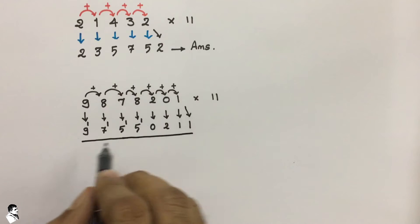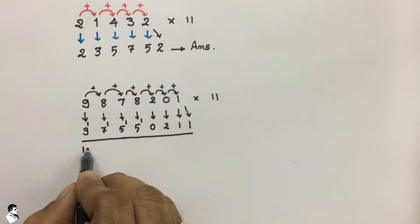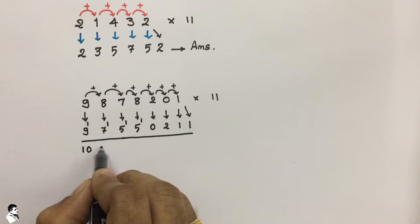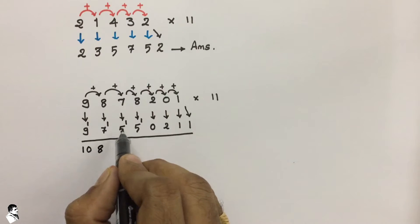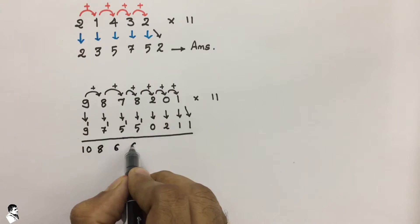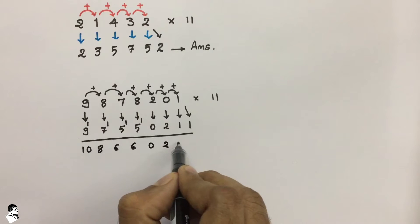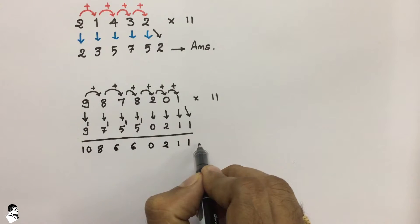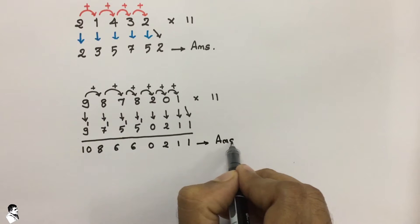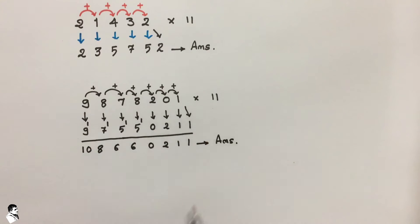Now sum up these values. We make a summation: 9 plus 1 is 10, 7 plus 1 is 8, then 8, then 5 plus 1 is 6, then 5 plus 1 is 6, then 0, 2, 1, 1. So this is the answer when we multiply 9878201 with 11.